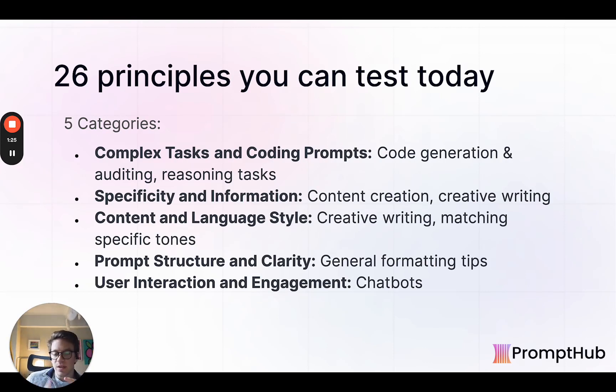In general, they broke down the principles into five different categories. So I find these categories helpful as a starting place to kind of find and orient yourself in terms of what your use case is. So if you're doing content creation, specificity and information is the category you probably want to go to, and so on and so forth.